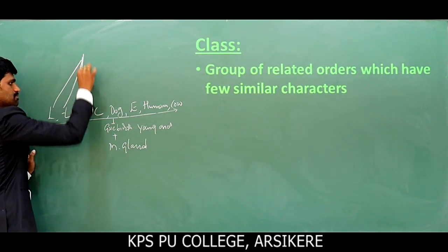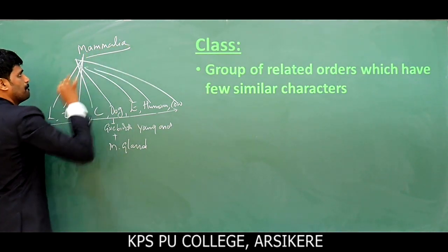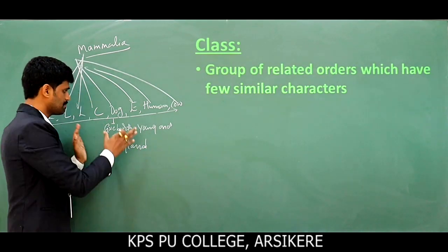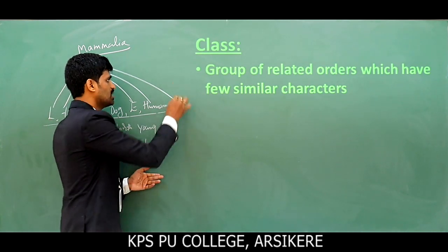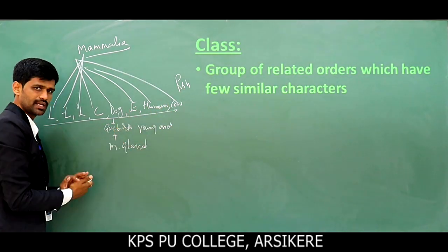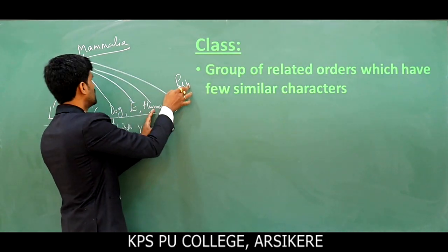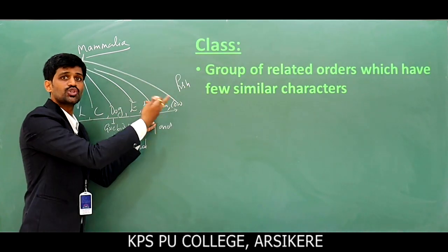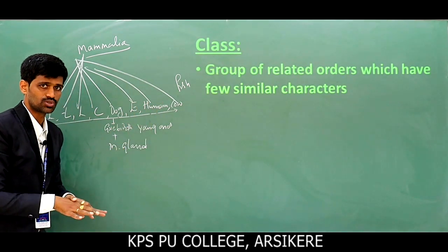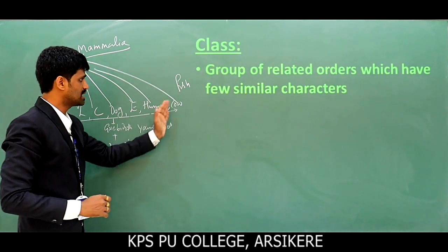That's why all these animals are coming under the class Mammalia. The mammary gland and giving birth to young ones are the basic similarities for this grouping. For example, compare with fish — fish are completely dissimilar. Fish do not have the same features, so they are placed in another class.